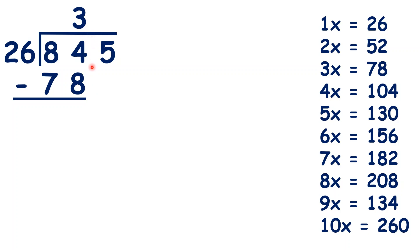Now, 84 minus 78 is 6, and we can bring down the 5, so that we can work out 65 divided by 26. We can see that 2 times 26 is 52, so we can write 52 under our 65, and 2 in our answer.